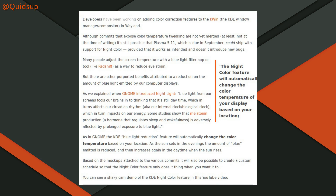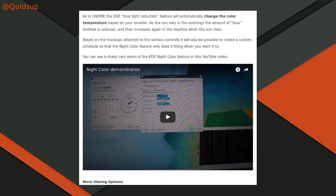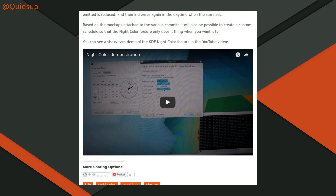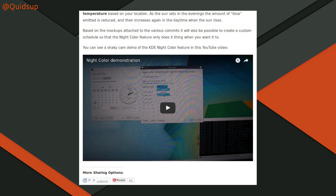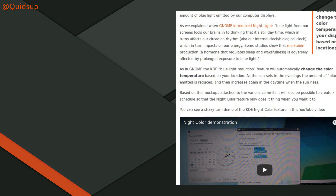Some studies show that melatonin production — a hormone that regulates sleep and wakefulness — is adversely affected by prolonged exposure to blue light. This is a feature I've never really considered using. I've been using computers for so many years that I've just gotten used to it, but maybe it would be interesting to try out. What are your thoughts on it? Do you make use of the Night Light in GNOME, or do you use something like Redshift? Is it useful?